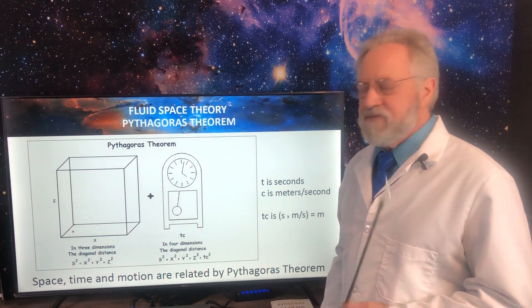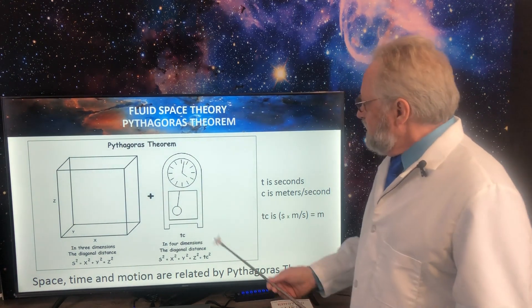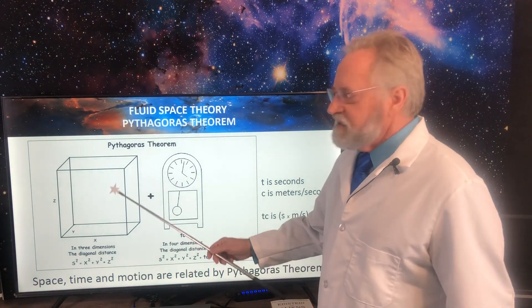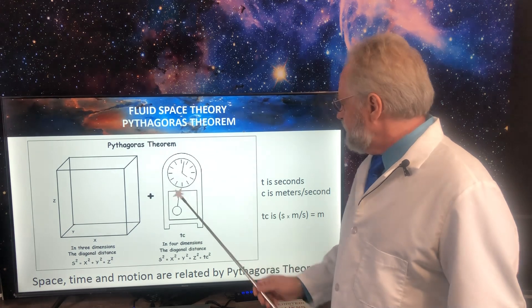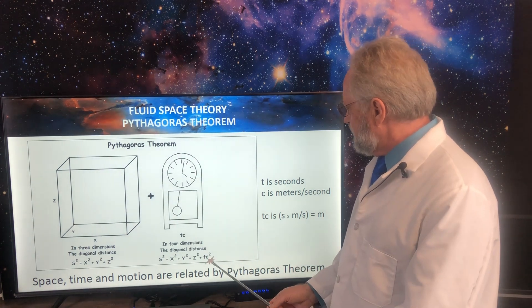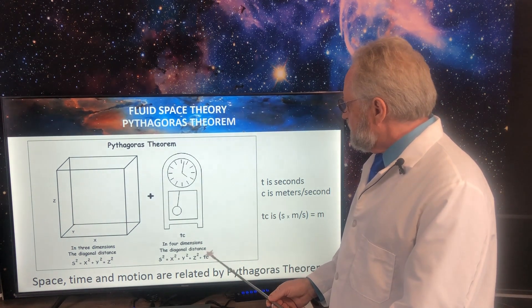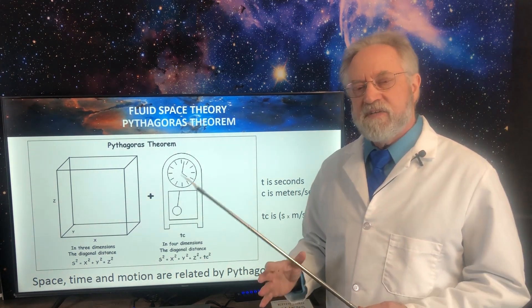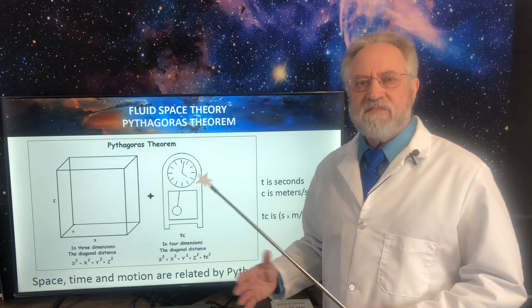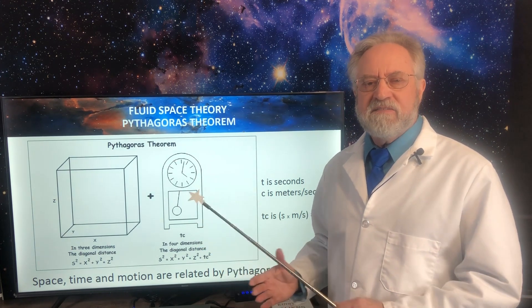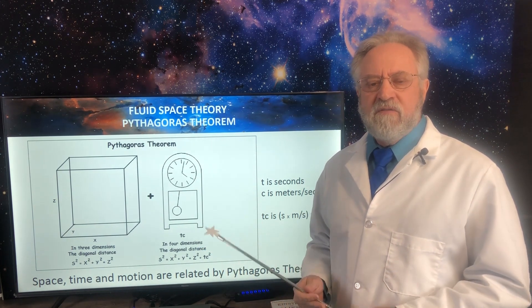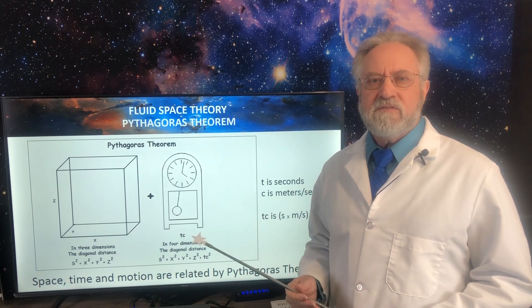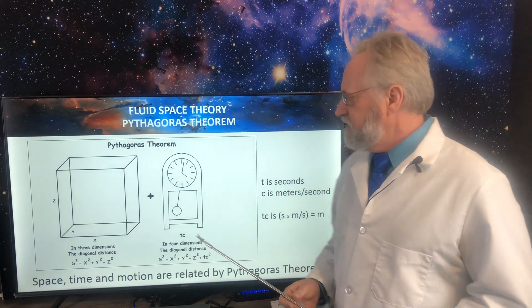Now, another thing to note about this, everyone usually says that there's three dimensions in time. But you can't disregard this C component. It's time and motion. So the fourth dimension is actually dimension of time and motion. And that's what fluid space theory brings to the table, is it accounts for the motion part, which is usually dismissed or forgotten about in other theories.